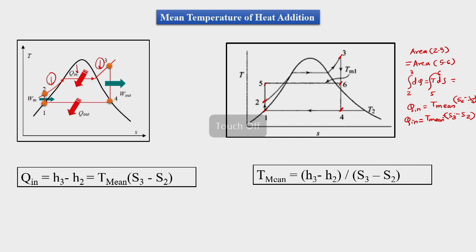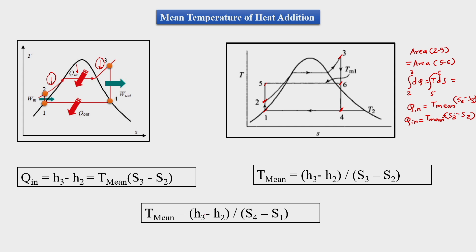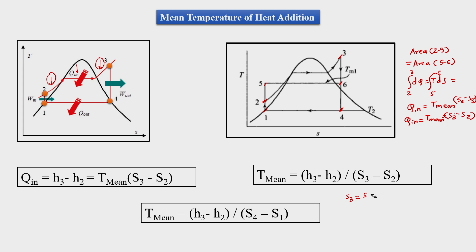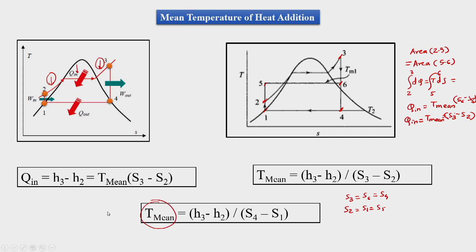Therefore, T_mean equals (h3 minus h2) divided by (s3 minus s2). Since s3 equals s6 equals s4 and s2 equals s1 equals s5, we can use any of these entropy values. This is the method for calculating T_mean for the isobaric process of heat addition.